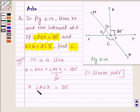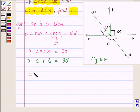Now angle POX is the sum of a and b. Therefore this can further be written as a plus b is equal to 90 degrees. Now a is to b is equal to 2 is to 3.